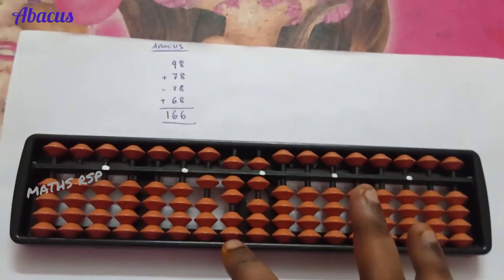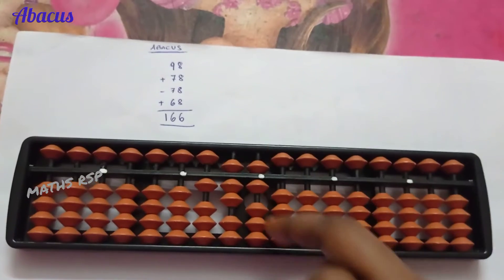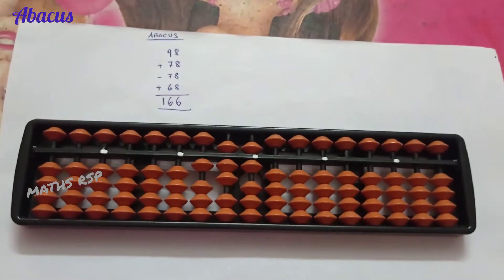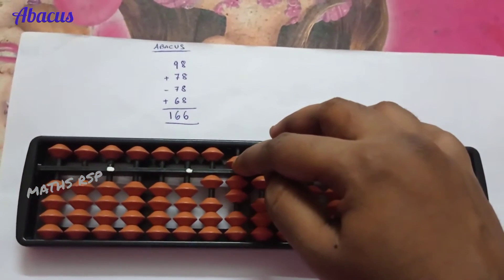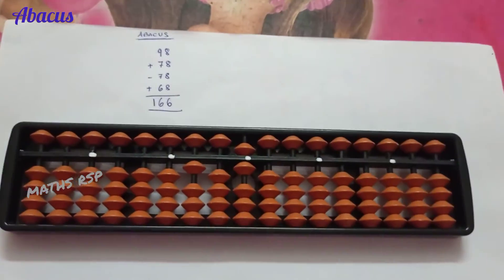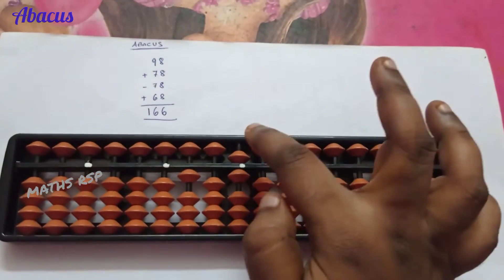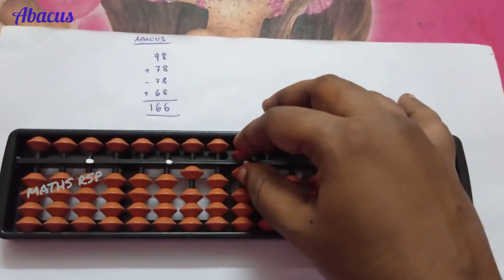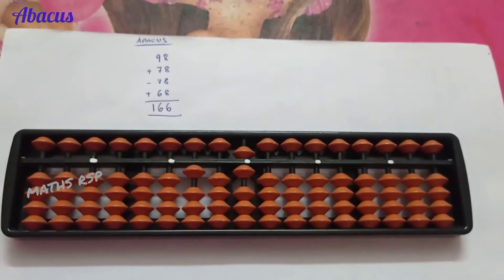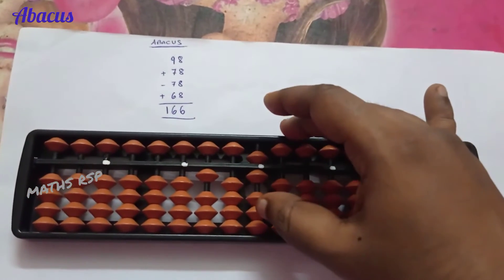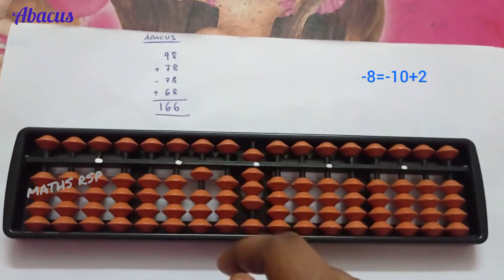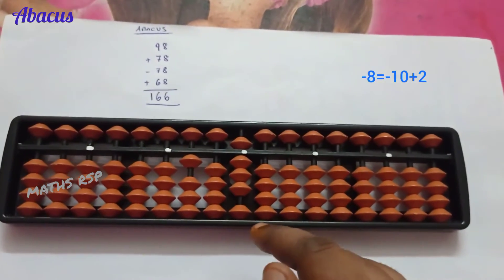Next, the third row is minus 78 — we need to remove seven beads from the ten's strot and eight beads from the one's strot. Removing means moving beads away from the answer board. Minus seven in the ten's strot: five, six, seven — minus 70 is removed. Next we need to remove eight beads from the one's strot, but only six beads are added so we cannot remove eight directly. Apply the big friend formula: eight's big friend is two, so we add two in the one's strot and remove one bead from the ten's strot — that is minus 8 equals minus 10 plus 2.